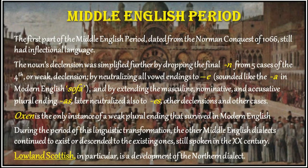Now we turn to the Middle English period. The first part of the Middle English period, dated from the Norman conquest of 1066, still had inflectional language. The noun's declension was simplified further by dropping the final N from five cases of the fourth, or weak, declension.